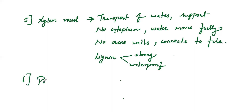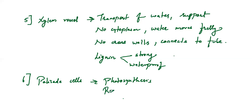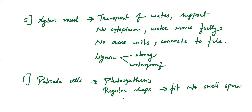The next type of cell is palisade cells, which deal mainly with the process of photosynthesis. These cells are regular in shape so that they can fit into even the tiniest place. Because they help in the process of photosynthesis, they will be having many chloroplasts.